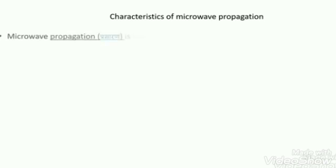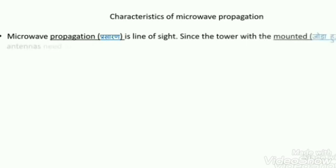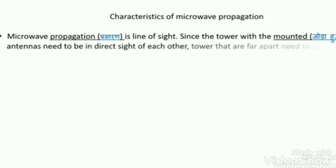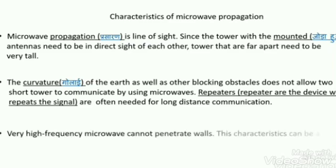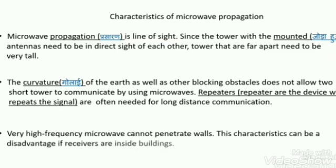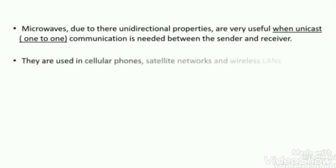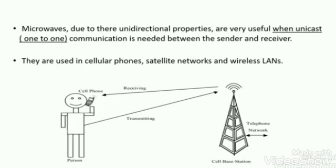Microwave propagation always supports the third type: line of sight propagation. The microwave tower antenna needs to be in direct sight with one another, and should be placed in a tall location so signals can be narrowly focused to another antenna. Repeaters are used in microwave transmission to repeat and extend the signals effectively. Due to their unidirectional property, microwaves are very useful for unicasting — sending signals from one device to another device in a single direction. Uses of microwaves include cellular phones, satellite networks, and wireless LAN.